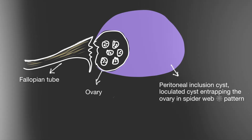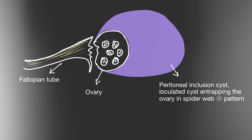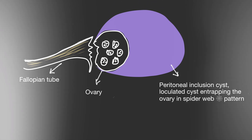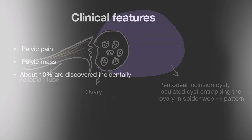Look at this diagram — it shows a pictorial representation of the oozing of ovarian fluid, which accumulates, becomes loculated, and engulfs the ipsilateral ovary. The engulfed ovary, as you can see, appears normal within it.